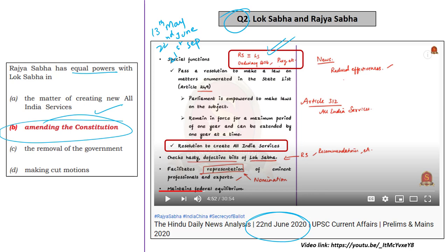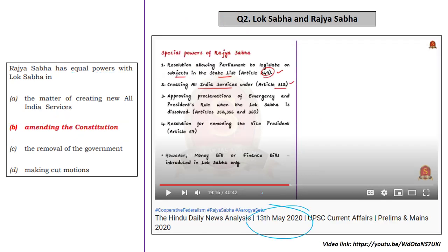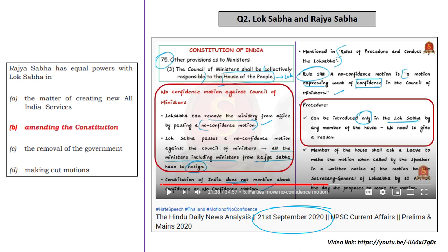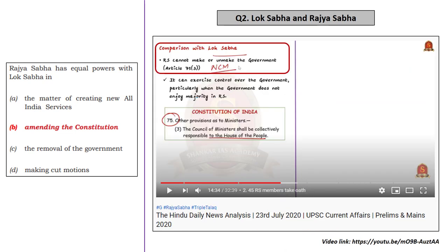On the same day we also said that Rajya Sabha has special powers in relation to creation of all India services under Article 312 of the Indian Constitution. We also discussed this on 13th May in the Hindu News Analysis, mentioning that in terms of creation of all India services, Rajya Sabha is not placed on equal footing with Lok Sabha — so you can eliminate Option A. On 21st September 2020 in the News Analysis, we mentioned that Rajya Sabha and Lok Sabha are not equal in terms of removal of government, because a no-confidence motion can be introduced only in Lok Sabha. We also said on 23rd July 2020 that Rajya Sabha cannot make or unmake the government — it cannot pass a no-confidence motion to remove the ruling government. So by this you can eliminate Option C.